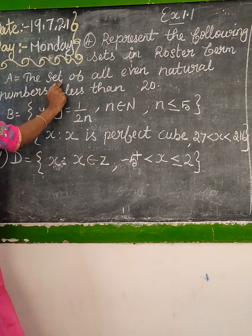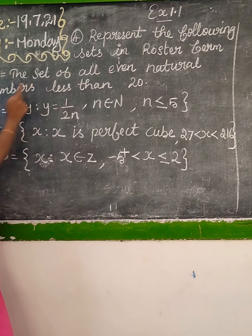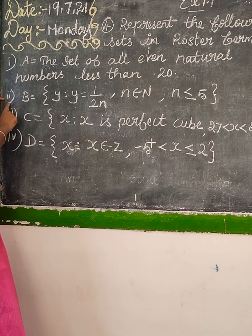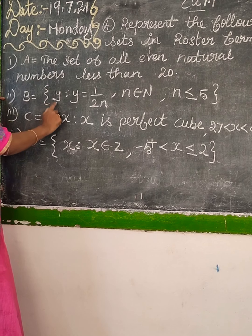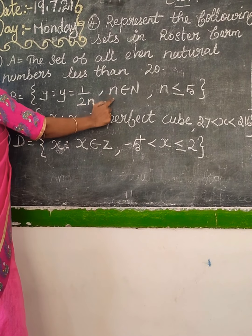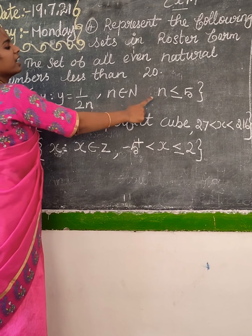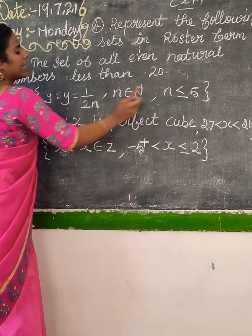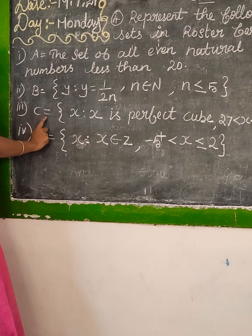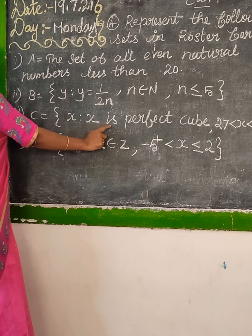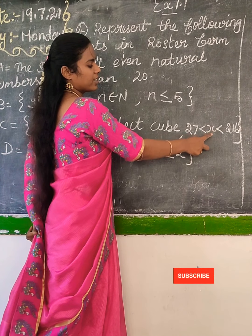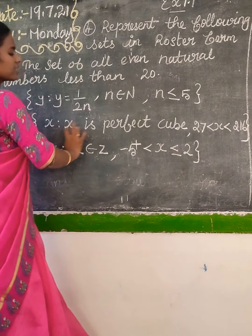A equal to the set of all even natural numbers less than 20. This is the first subdivision. Second one, B equal to Y such that Y equal to 1 by 2N, N belongs to natural number, and N less than or equal to 5. This is the limit for this statement. Then third one, C equal to X such that X is a perfect cube. The limit is 27 less than X less than 260.